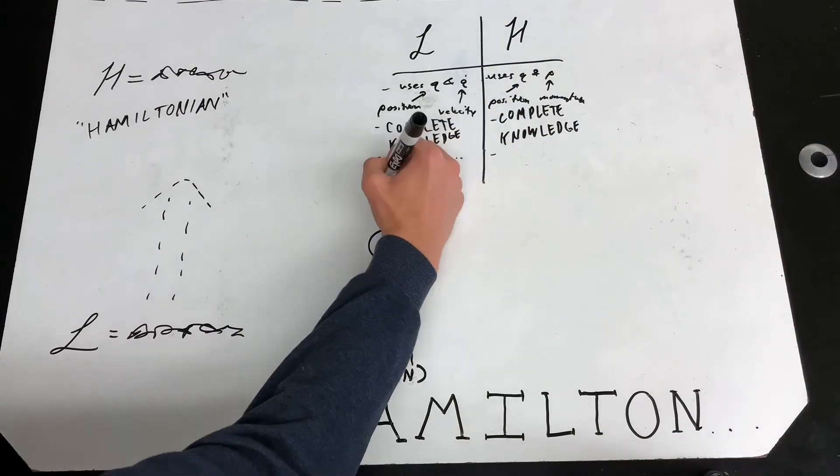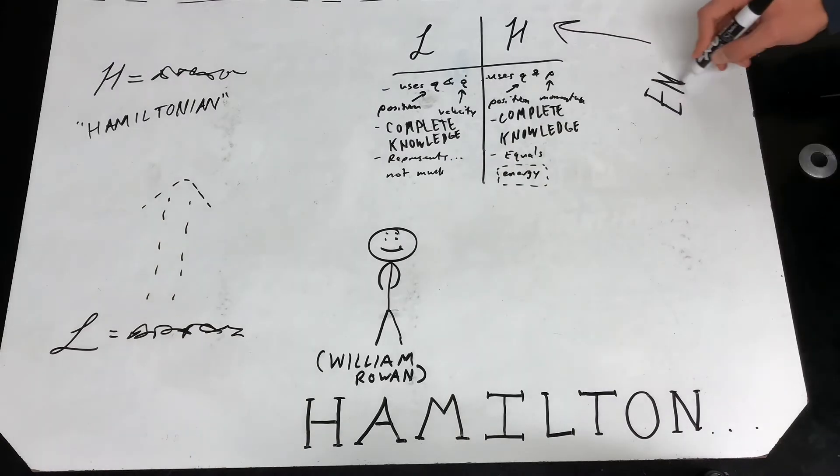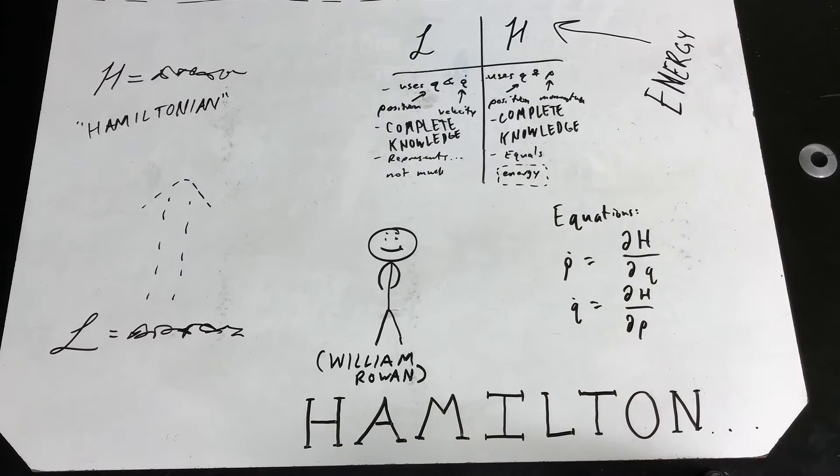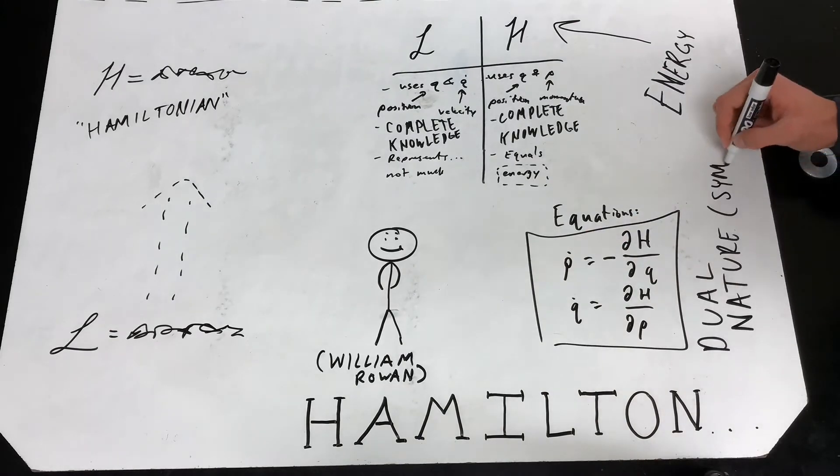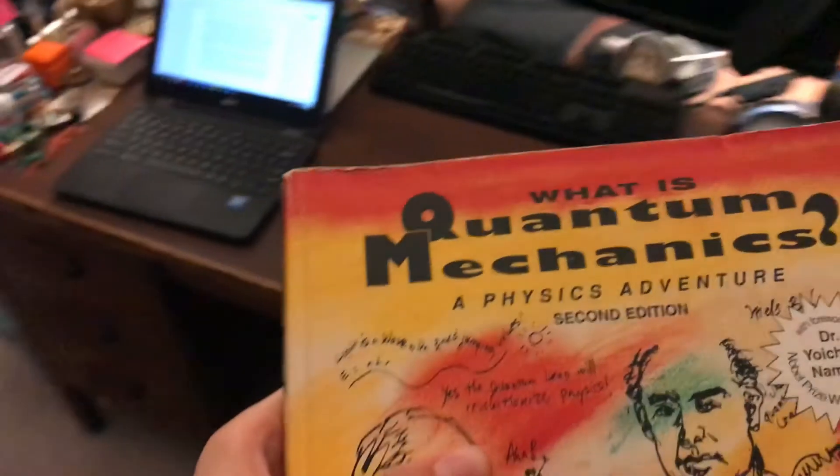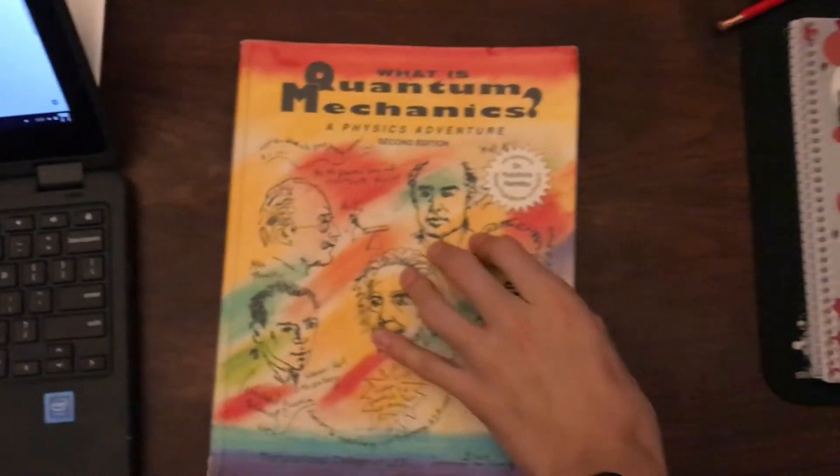This also tells us everything we could ever want to know about the system. The Hamiltonian is also equal to the total energy of whatever system it describes. So, you know, that's pretty cool too. As you can see, the equations for the Hamiltonian also have a certain duality, a symmetry about them. And don't worry, we'll come back to this later when we talk about Noether.